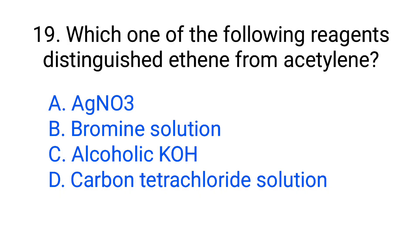Question number 19. Which one of the following reagents distinguishes ethene from acetylene? Option A: AgNO3. B: Bromine solution. C: Alcoholic KOH. D: Carbon tetrachloride solution. The correct answer is option A, AgNO3.